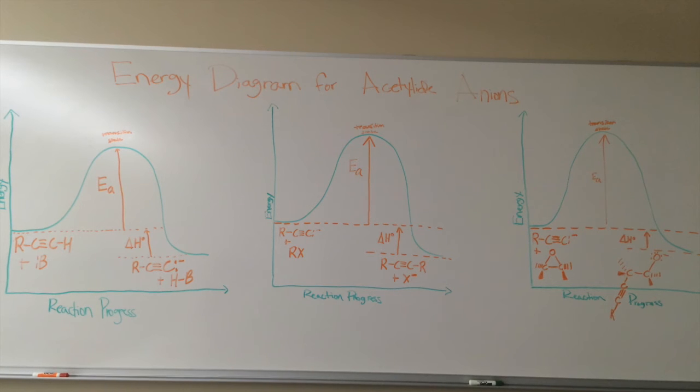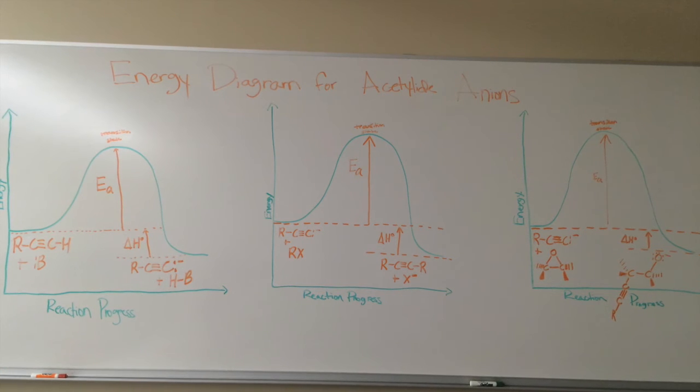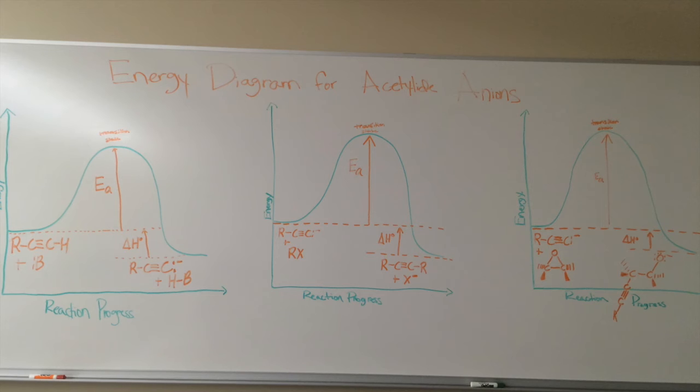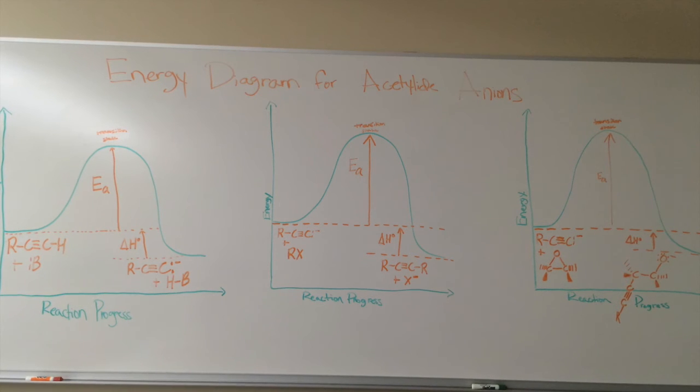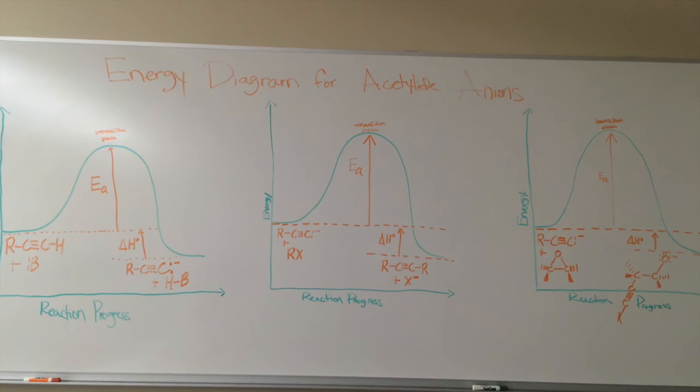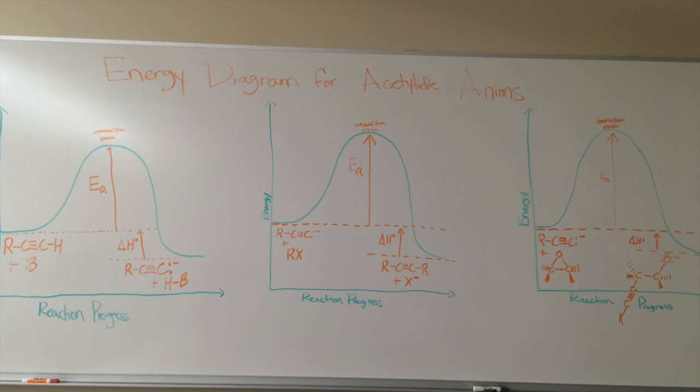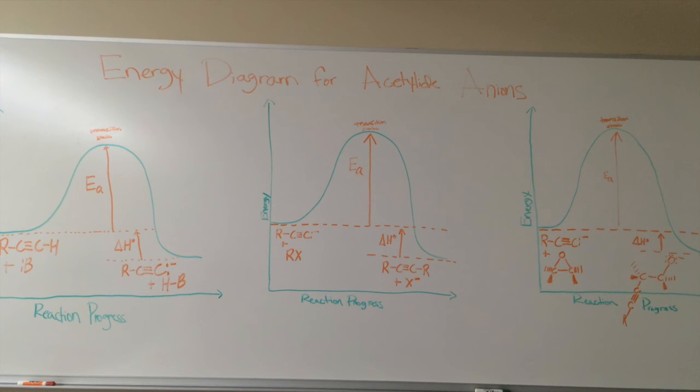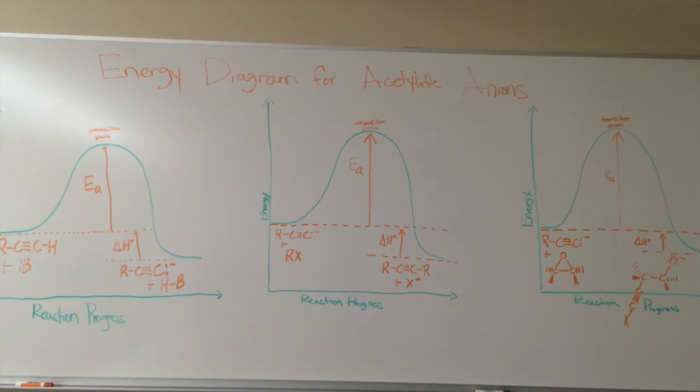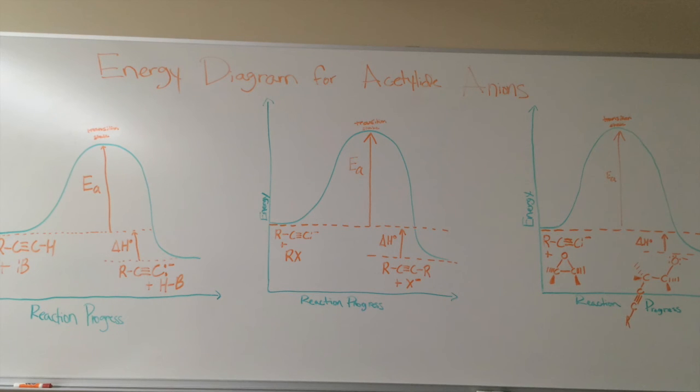The reaction of an acetylide anion with an alkyl halide is exothermic because the halogen makes a good leaving group, and the acetylide anion is able to come in, remove it, and form a bond. The halogen makes a good leaving group because it is less basic than the carbon, and this makes the carbon-to-carbon bond more favorable.